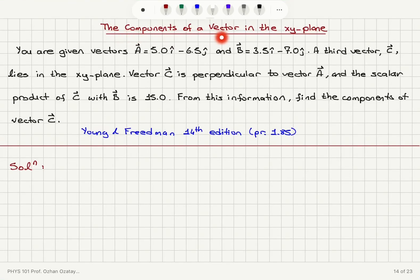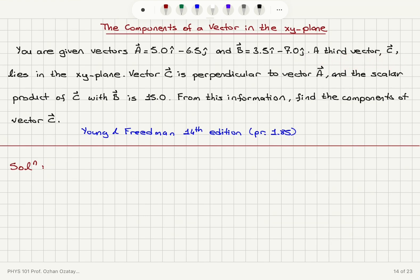The components of a vector in the x-y plane. You are given vector A: 5î minus 6.5ĵ, and vector B: 3.5î minus 7ĵ. A third vector C lies in the x-y plane. Vector C is perpendicular to vector A, and the scalar product of vector C with vector B is 15. From this information, find the components of vector C.